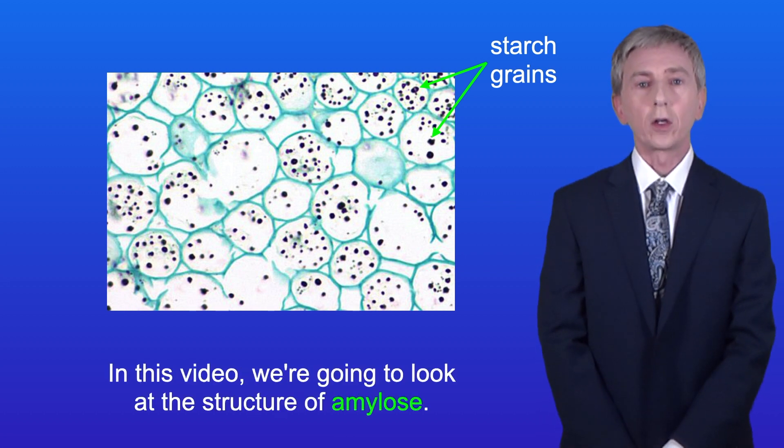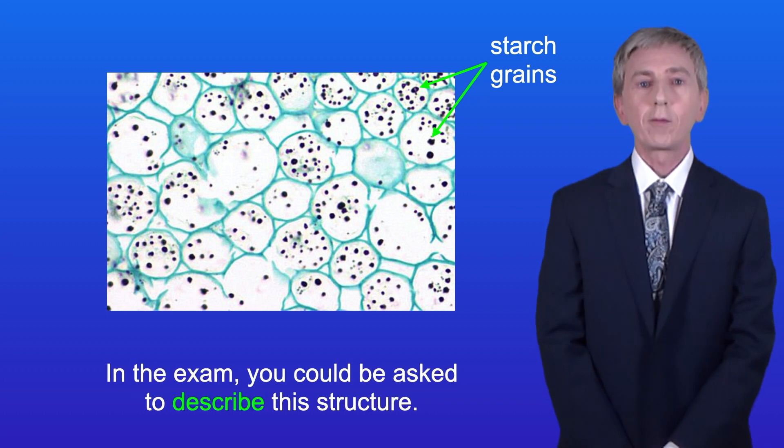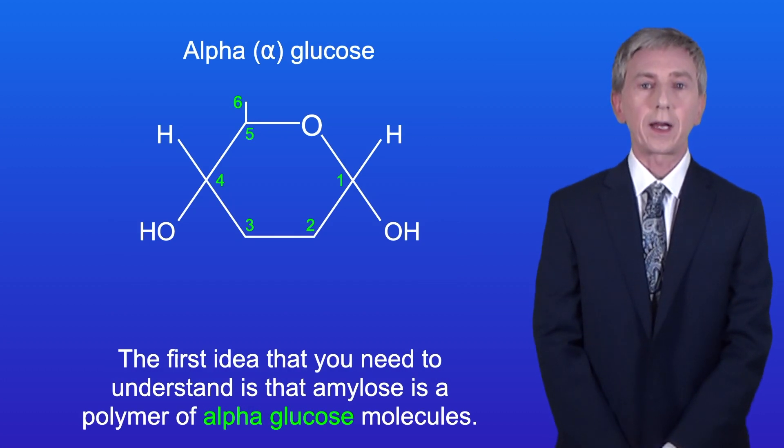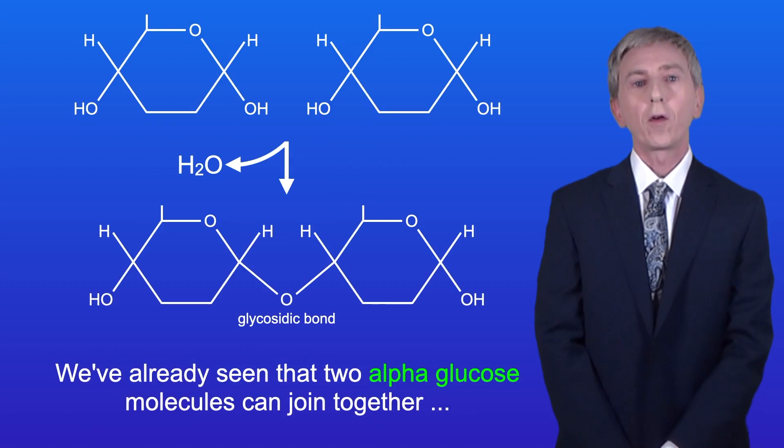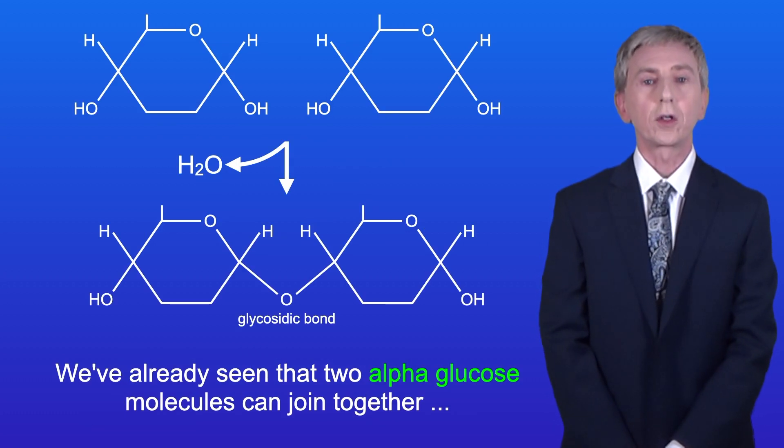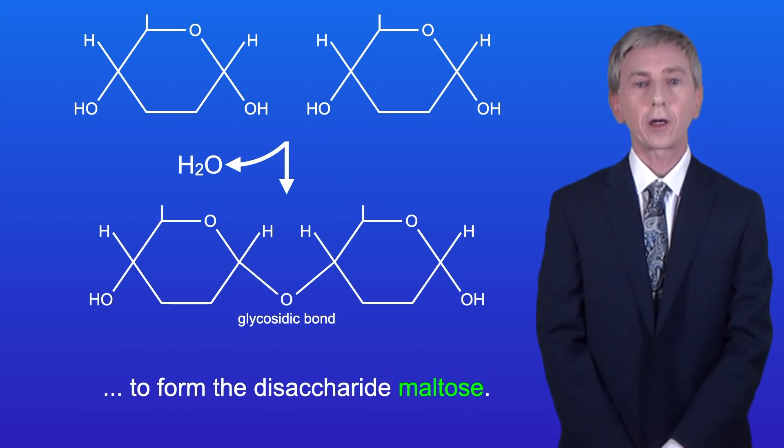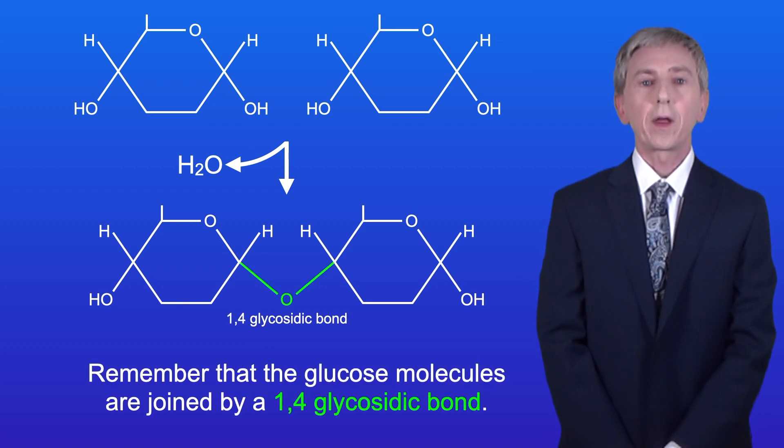In this video we're going to look at the structure of amylose, and remember that in the exam you could be asked to describe this structure. The first idea you need to understand is that amylose is a polymer of alpha glucose molecules. We've already seen that two alpha glucose molecules can join together to form the disaccharide maltose, and the glucose molecules are joined by a 1,4 glycosidic bond.